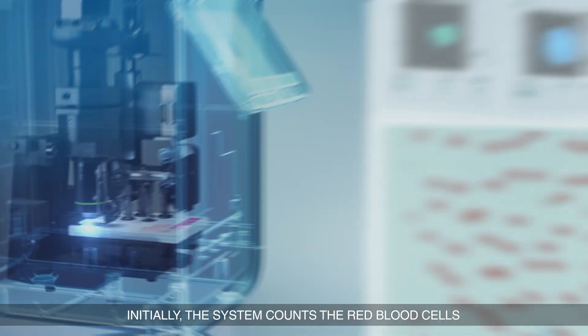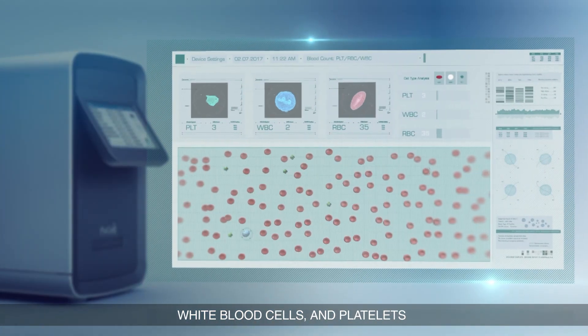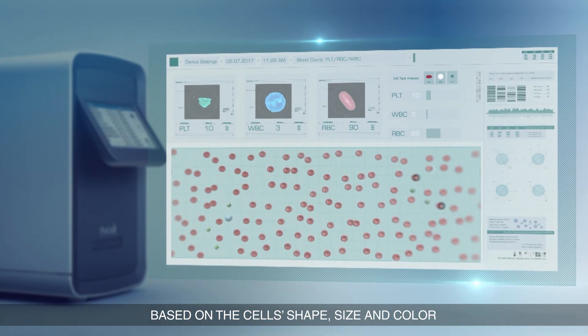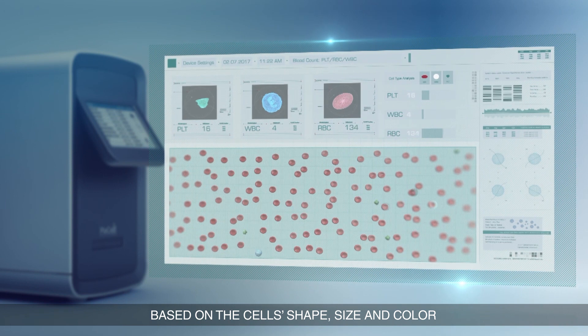Initially the system counts the red blood cells, white blood cells, and platelets based on the cell's shape, size, and color.